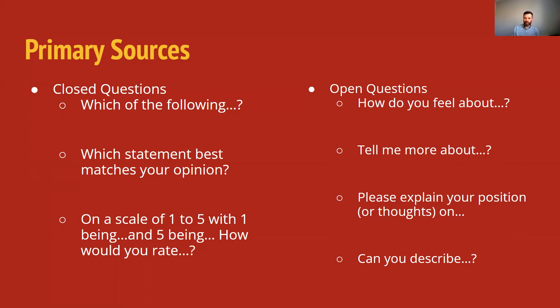For example, with a closed question, you might say which of the following are things that you have experienced, and then you give a list and they say yes or no. Another one is which statement best matches your opinion, and you give two opposing opinions. Or sometimes you can use a scale: on a scale of one to five, with one representing strongly disagree and five representing strongly agree, how do you feel about this topic? Or how often do you do this activity, and you get them to rate themselves.